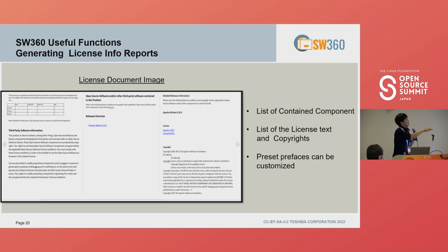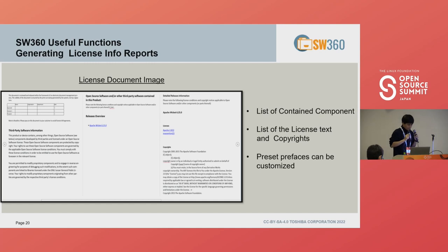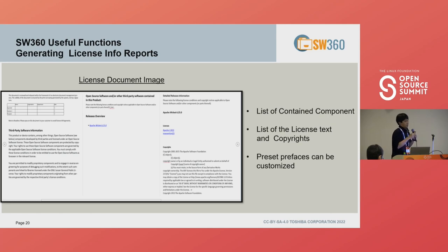The generated document includes copyrights, license text, and other information. You can provide license document information quickly with this function when you need to share it with customers.